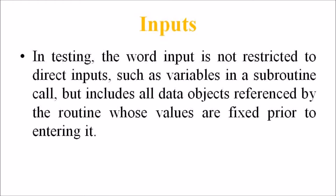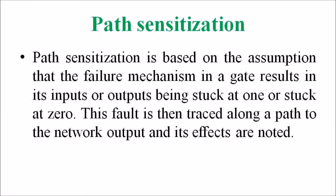The input of a particular test is mapped as a one-dimensional array called an input vector. Path sensitization is based on the assumption that a failure mechanism in a gate results in its input or output being stuck at one or stuck at zero. This fault is then traced along a path to the network output, and its effects are noted. With this method, one can determine how the fault can be provoked and how it can be propagated to the output by means of sensitizing a path from the fault through the associated gate to the outputs of the network.